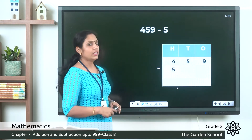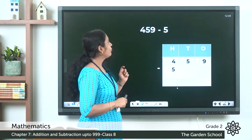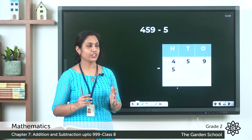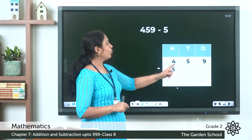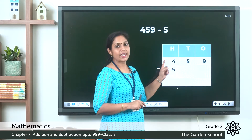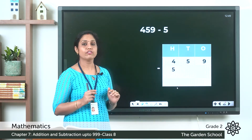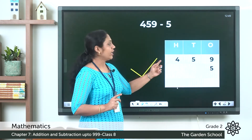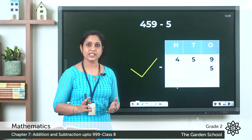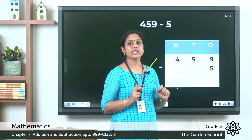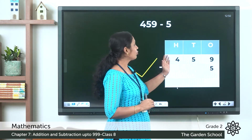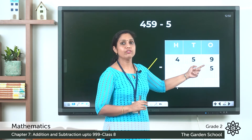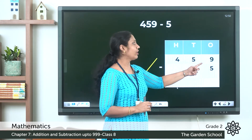Next we have 459 minus 5. This time it is subtraction. Whether it is addition or subtraction, the placement of numbers must be correct. 459 is a three-digit number with ones, tens, and hundreds. Five is a one-digit number, so where should it be placed? It should be placed in the ones position. 459 has four hundreds, five tens, and nine ones; and in the second row we have five ones.